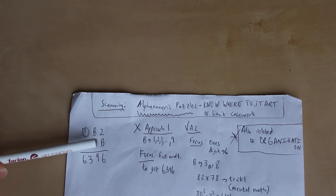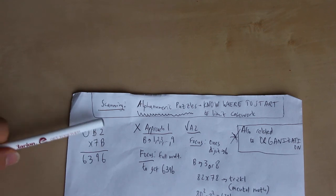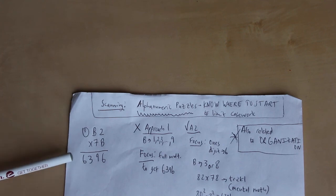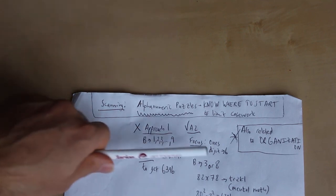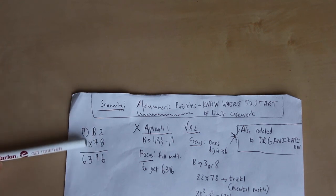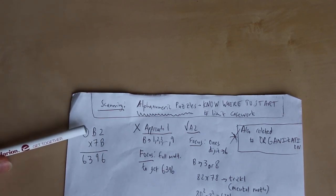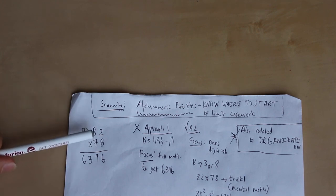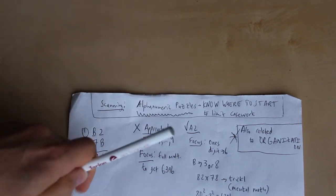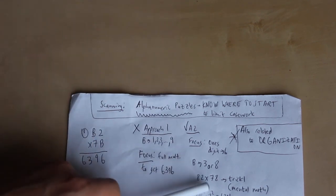So we can easily see that three doesn't work because 32 times 73 would be way too low because 30 times 70 is 2,100. So there's no hope that this is going to get us close to 6,000 something. So let's do 82. So we're going to have B is eight. So 82 and 78. And that looks pretty good because they're around 80. So 80 squared is 6,400.